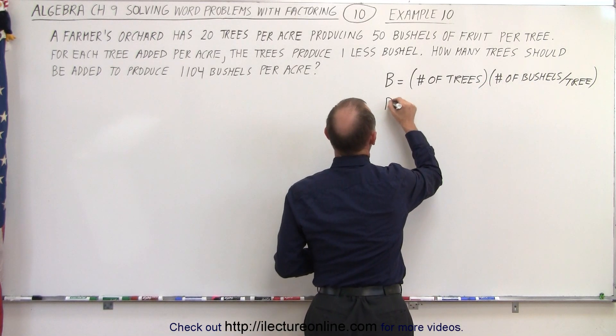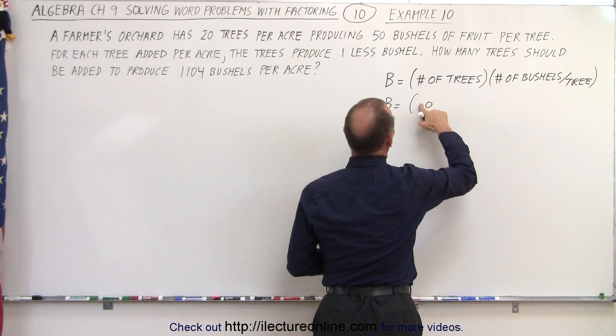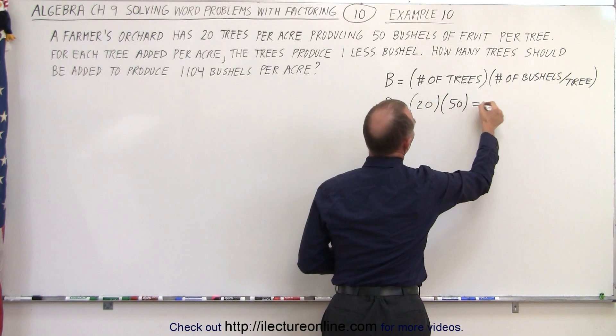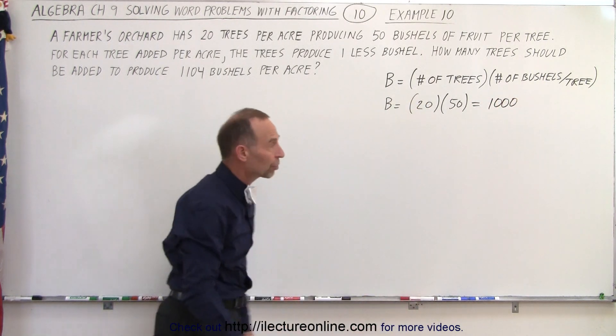The bushels equals the number of trees, which was 20 trees per acre, times the number of bushels per tree, that's 50. That gives us 1,000 bushels produced for each acre of trees.